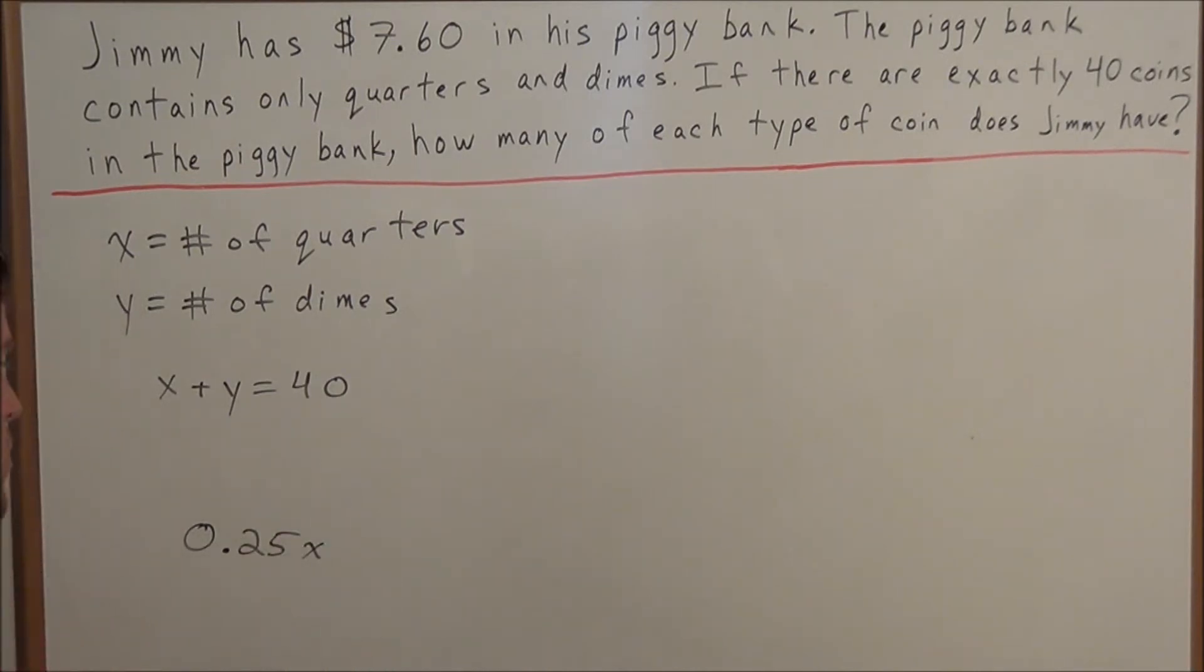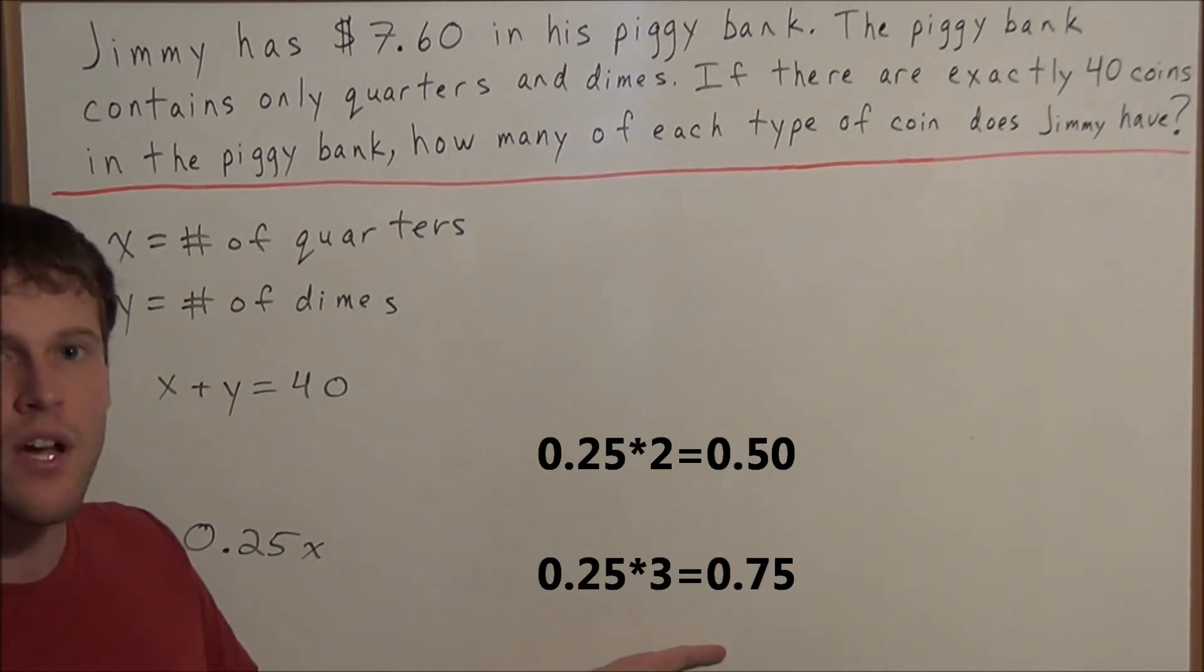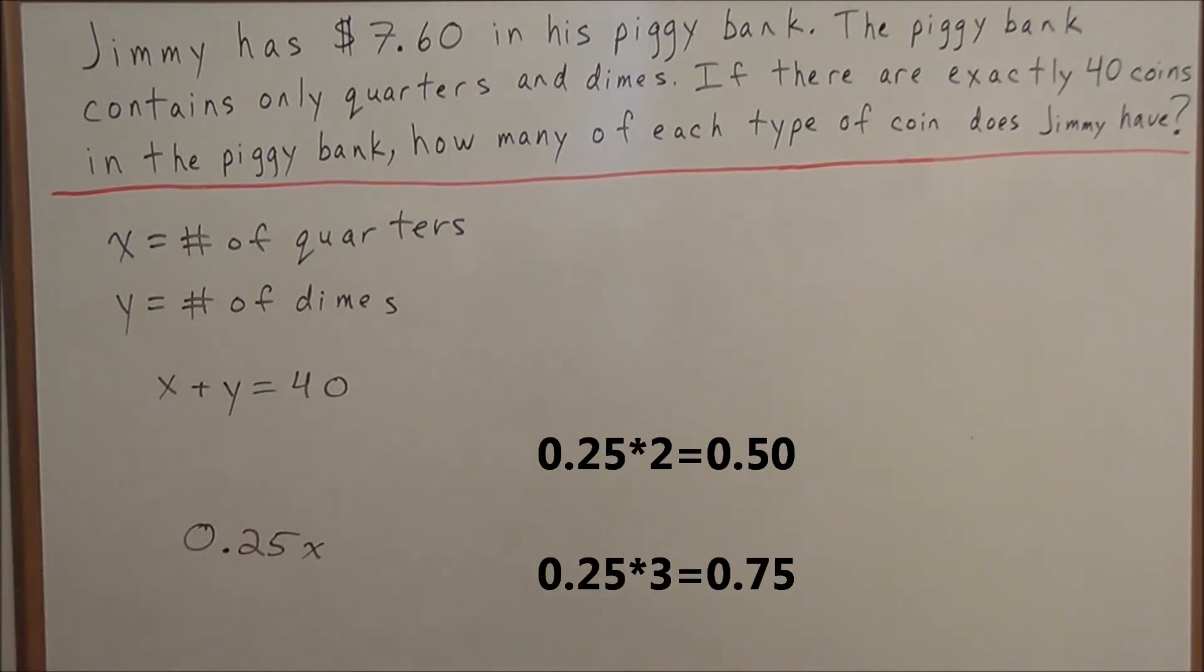For instance, if he had 2 quarters, we would be doing 0.25 times 2 equals 0.50. Or if he had 3 quarters, we would be doing 0.25 times 3 equals 0.75. So now we have 0.25 times x.